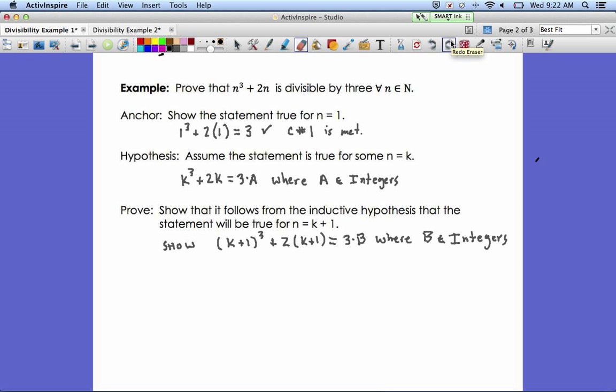And what we're going to do is just expand it. So we'll take that statement and we'll rewrite it over here on the left-hand side. k plus 1 cubed, when we multiply all that out, you get k cubed plus 3k squared plus 3k plus 1. And then we add on 2 times the quantity k plus 1, which will simplify to 2k plus 2.